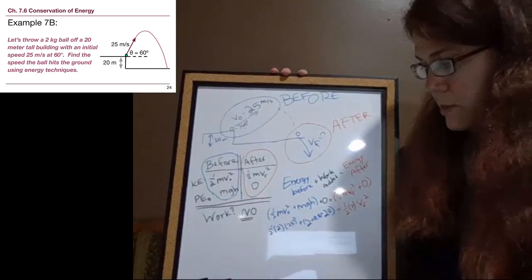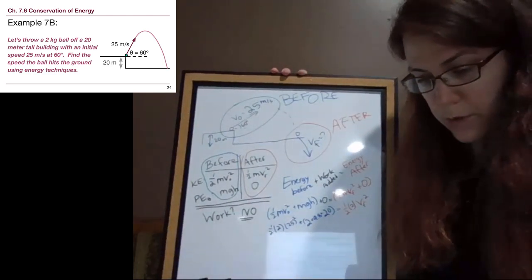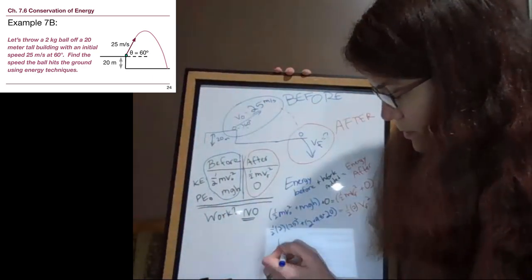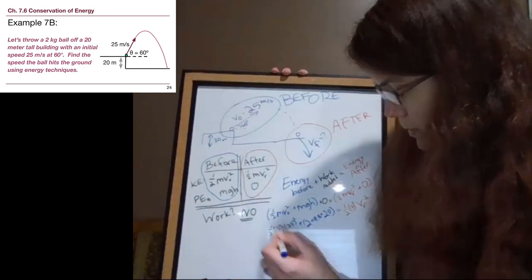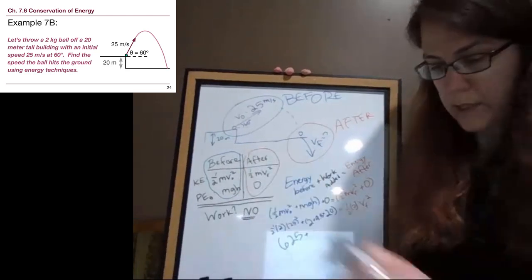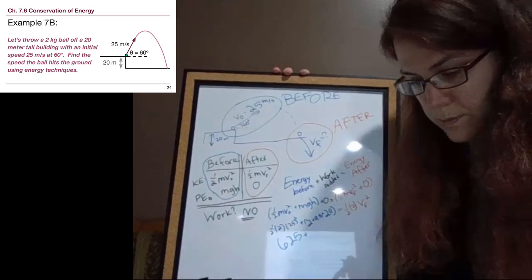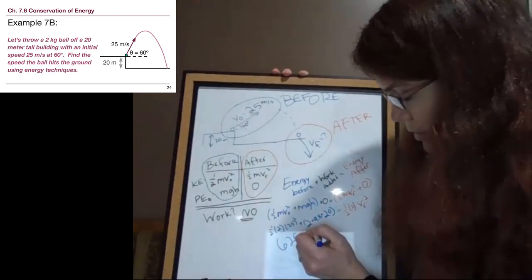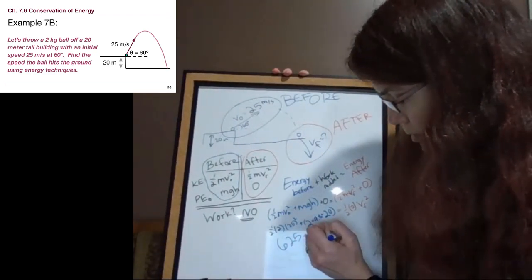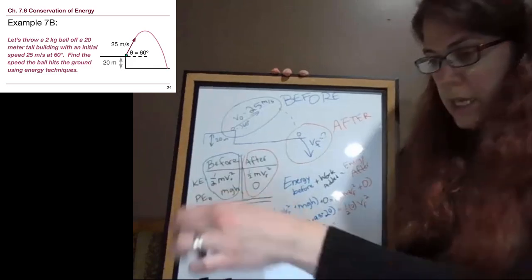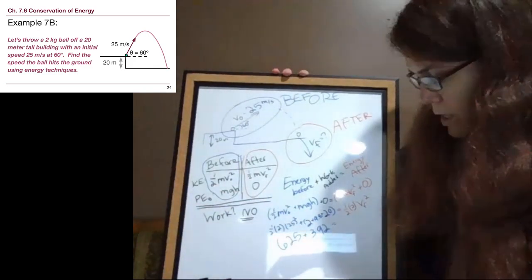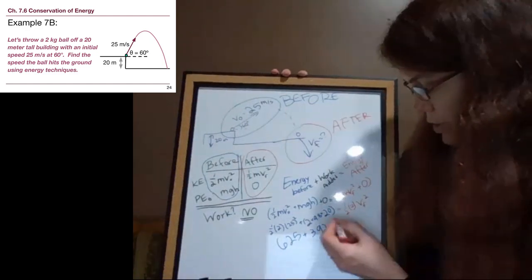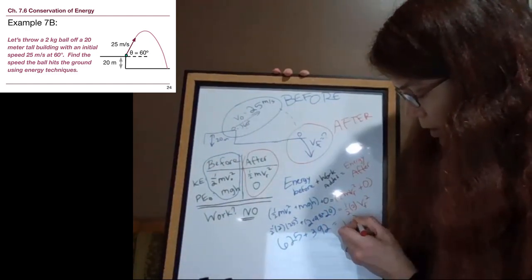So we can simplify this a bit. So first of all, for the first term there, we get 625. And that second term, we get 392. And then on the other side, one half times two is one. And so we just have v final squared.